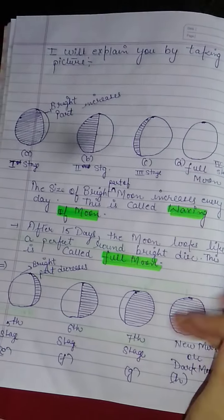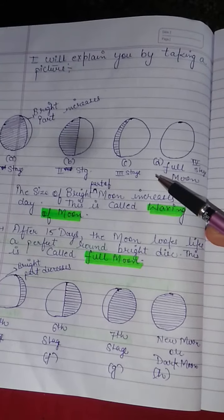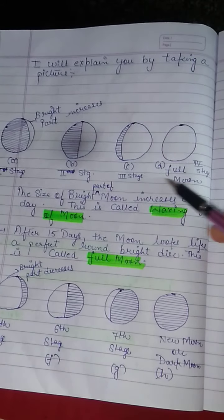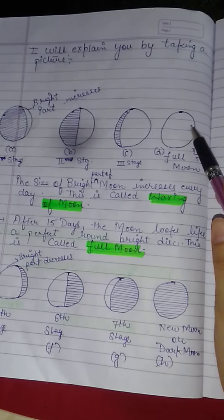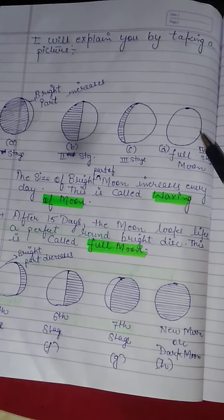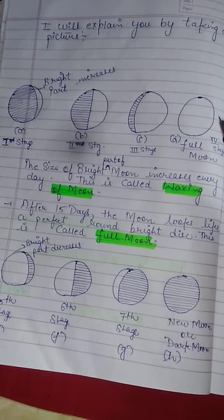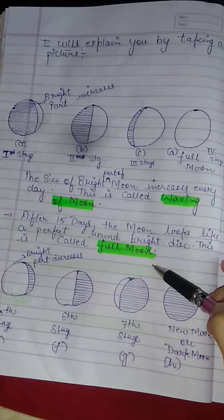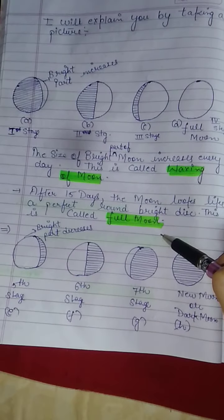After that, on the 15th day, the Moon looks like a perfect round bright disc. This is called full moon day. The bright part is fully visible and the Moon appears as a perfect round bright disc.